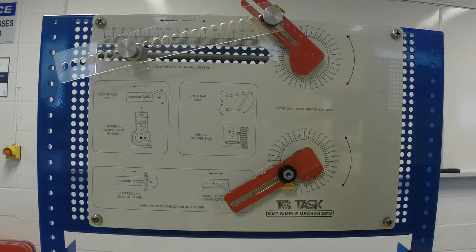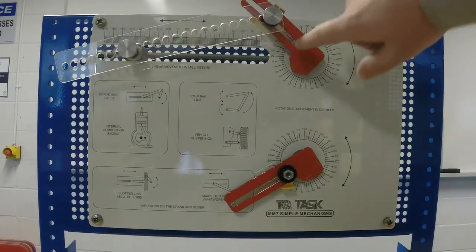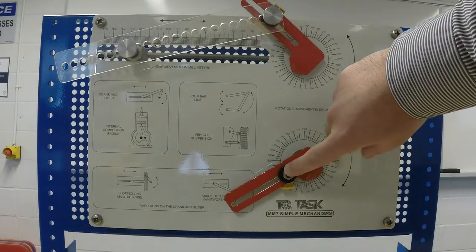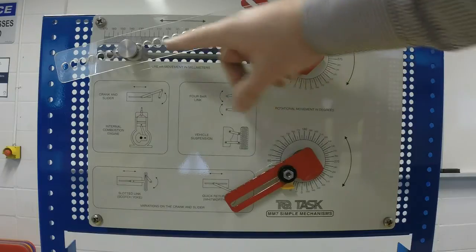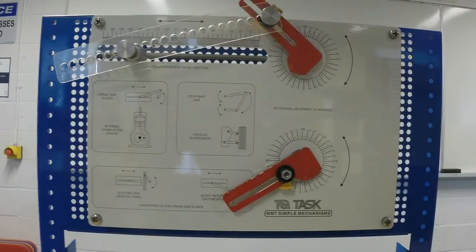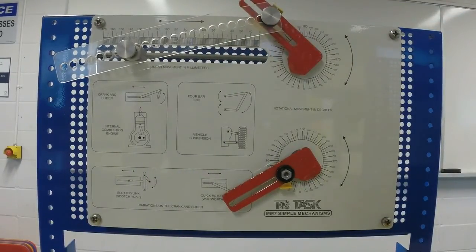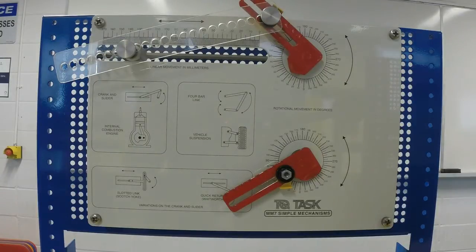The apparatus that we're going to use for this lab, as shown in the video, is called KIT-MM7. This apparatus consists of a printed black plate with two rotating cranks. So one here, one here, a slotted link, a connecting rod, and required fasteners to build the mechanism.